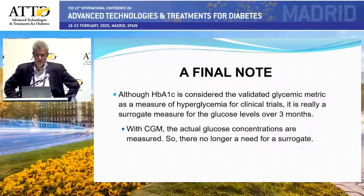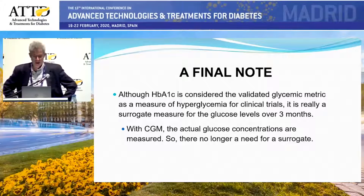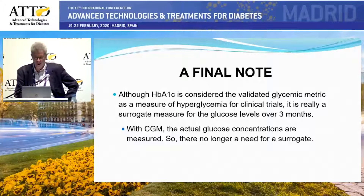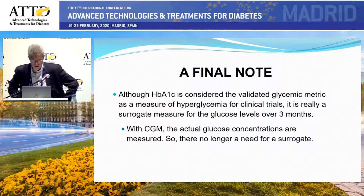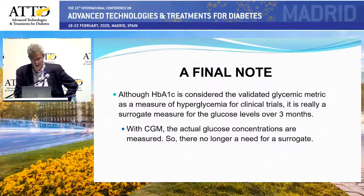One final note: when we talk about surrogate outcome measures, hemoglobin A1C became the validated glycemic metric based largely on DCCT as a surrogate for measuring hyperglycemia — because at that time we didn't have CGM and had no way to measure glucose levels realistically on a day-to-day basis. But now with CGM we can actually get the actual glucose concentrations. So when we have CGM, I think we really need to rethink whether we still need a surrogate like hemoglobin A1C, or whether we're getting all the information we need directly from CGM — which would be my viewpoint.